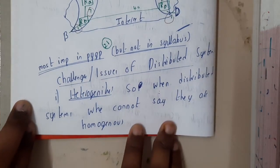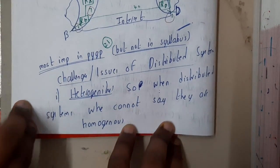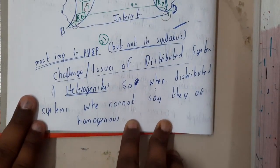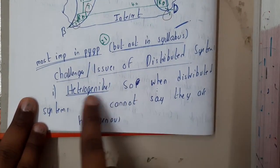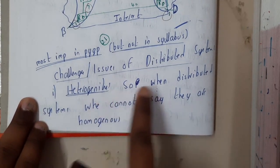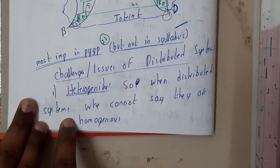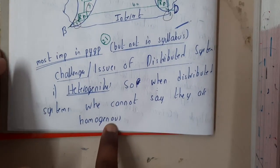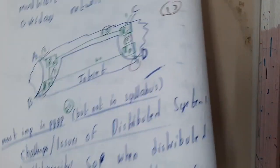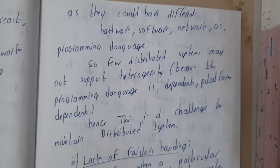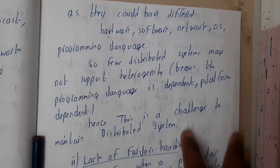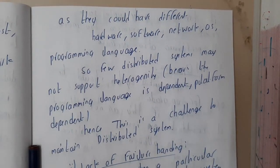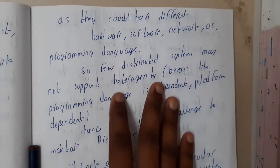Hello guys, we are back with our next lecture. In this lecture, let us go through the challenges or issues faced with distributed systems. The first thing is heterogeneity. When it comes to distributed systems, we cannot say that they are homogeneous. Assume that you are having a huge network of distributed systems for a particular company — can you say that the whole company runs their systems only with a particular operating system?